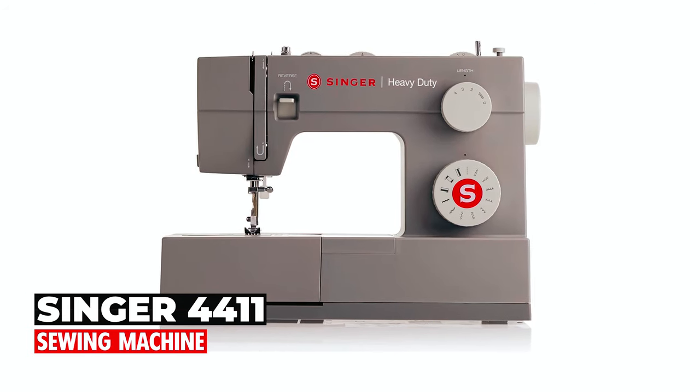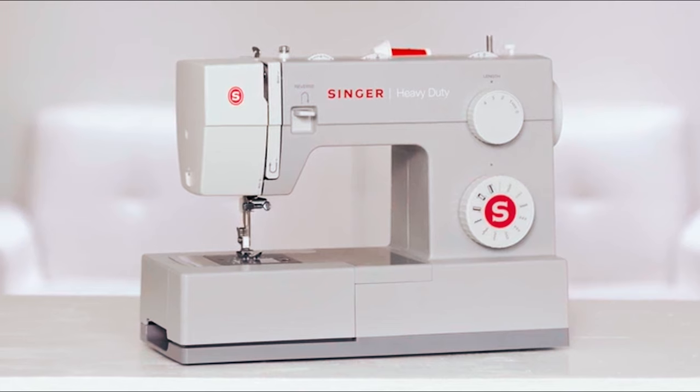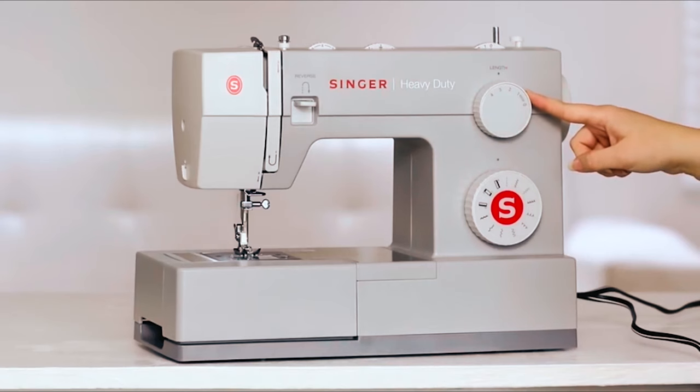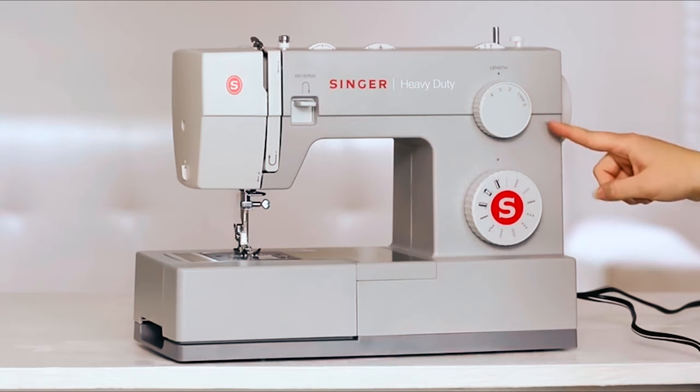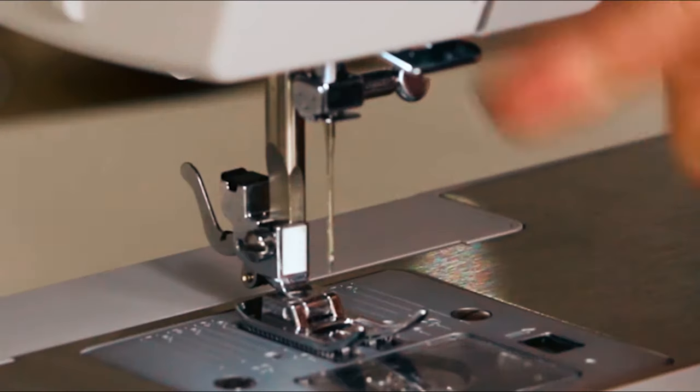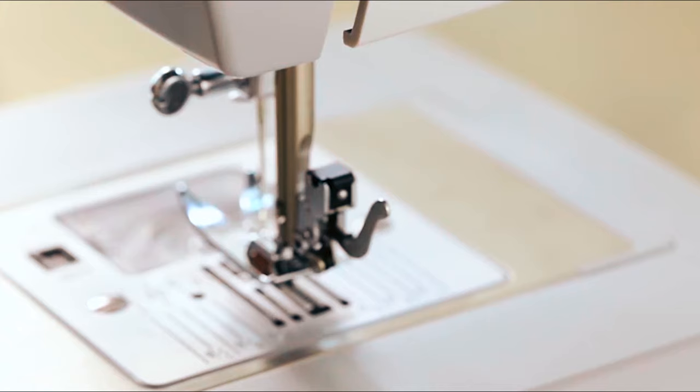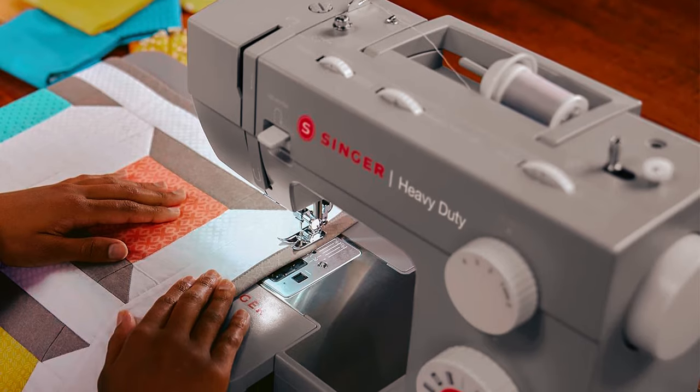Singer 4411 Sewing Machine. In at number 5, we have the Singer Heavy Duty 4411 Sewing Machine. This Singer sewing machine is a true workhorse packed with features for various projects. You'll love the adjustable presser foot control, allowing you to sew lightweight and heavyweight fabrics with ease. The stainless steel bed plate enables fabric to glide smoothly across the sewing surface while the heavy-duty metal frame adds stability.